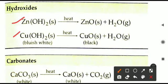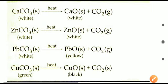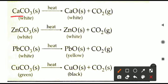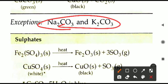For hydroxides: zinc hydroxide gives ZnO and copper hydroxide gives CuO, along with water. For carbonates, CO2 is always produced. Examples include calcium carbonate, zinc carbonate, lead carbonate, and copper carbonate — all produce their respective metal oxide plus CO2 on heating. Two exceptions are sodium carbonate and potassium carbonate, which do not produce an oxide on heating.